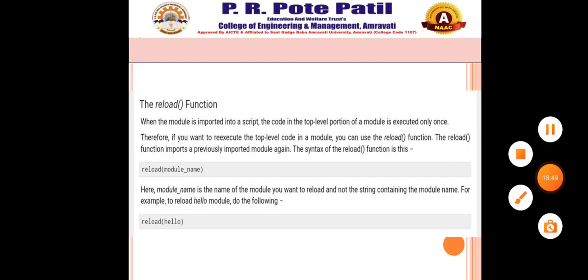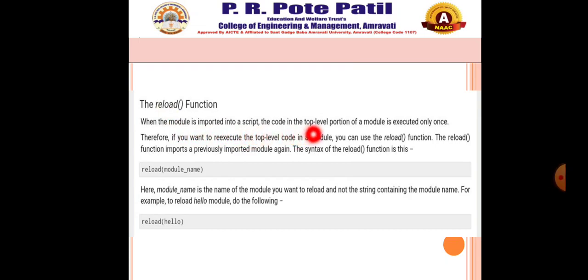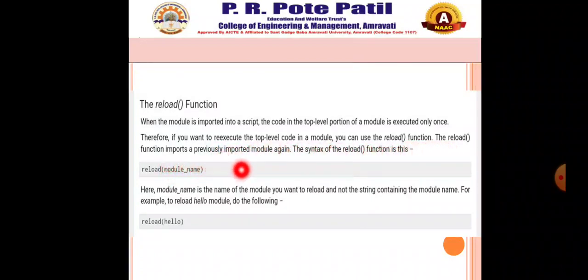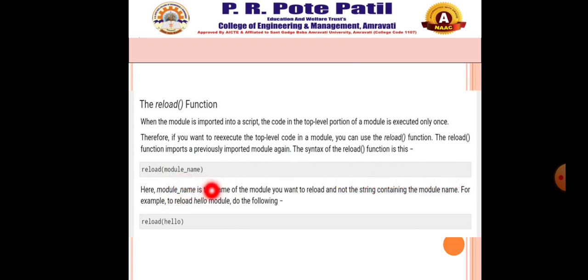The reload() function: when a module is imported into a script, the code in the top-level portion of the module is executed only once. If you want to re-execute the top-level code in the module, you can use the reload() function. The reload() function imports a previously imported module again. The syntax is: reload(module_name). The module name is the name of the module you want to reload — not a string. For example, to reload the hello module: reload(hello). By giving the module name in the parameter list, it will reload that particular module in your program.